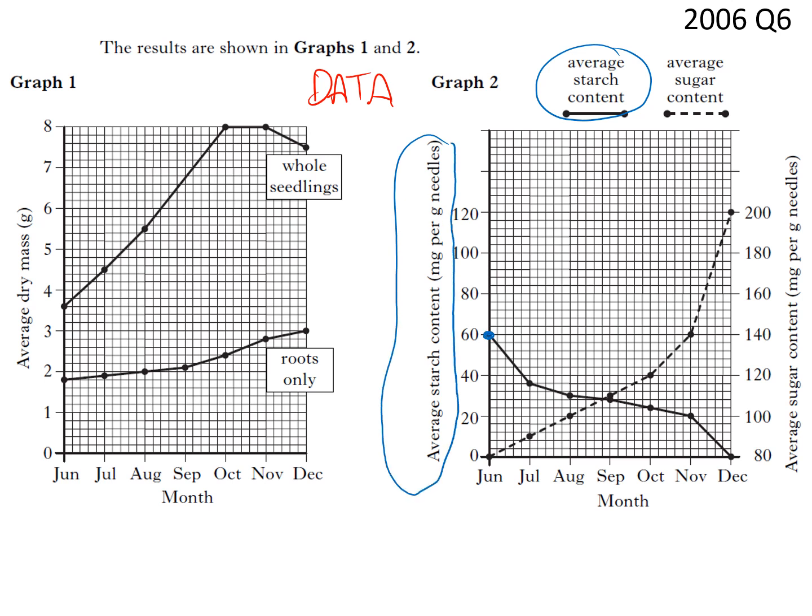And our sugar content is reading to this axis and it is this line. Be clear on those ones. We also have two different lines on the first graph, one for whole seedlings and one for roots only. It would also be worth you just checking that you're okay with the scale.